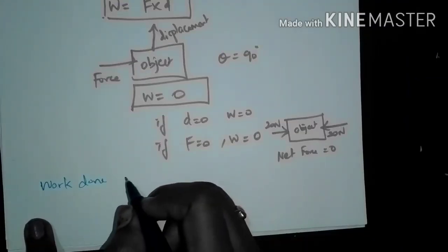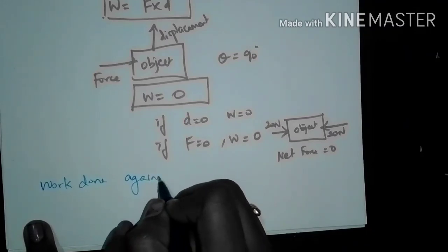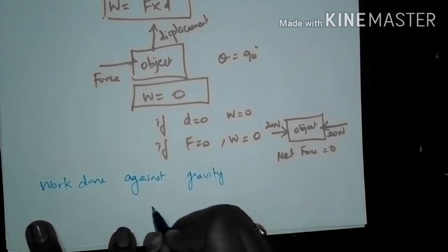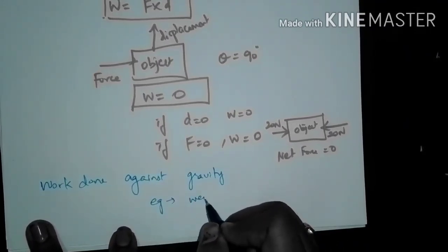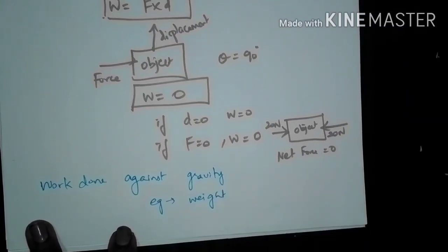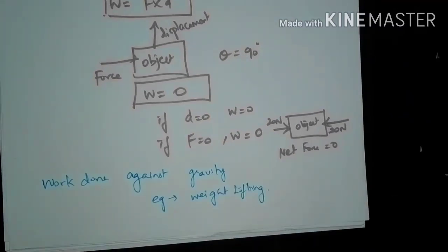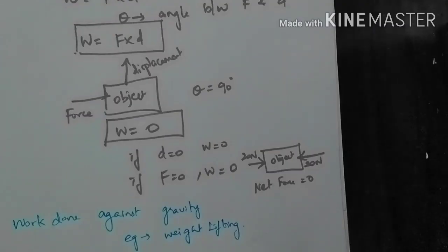There is also work done against gravity. For example, a weightlifter lifts a weight of 200 pounds against gravity to a height of 0.5 meters above ground level — this is work done against gravitational force. These are the basic definitions of work and force. Let us see more basic definitions in the next video. Thank you.